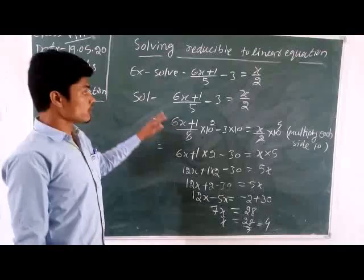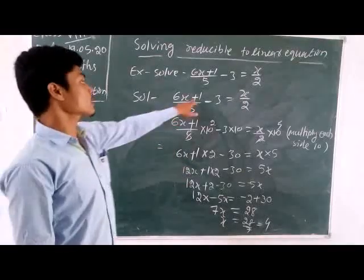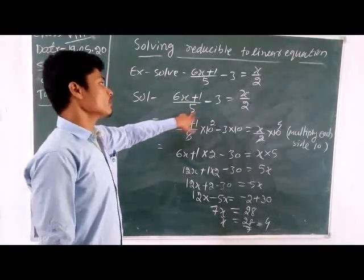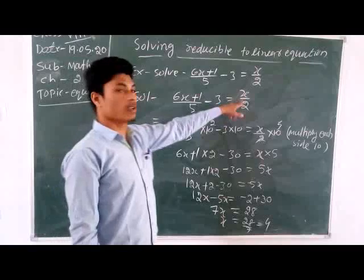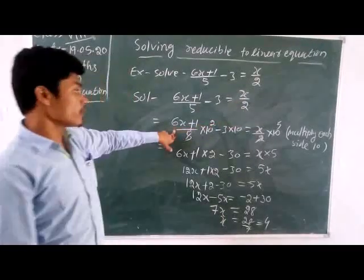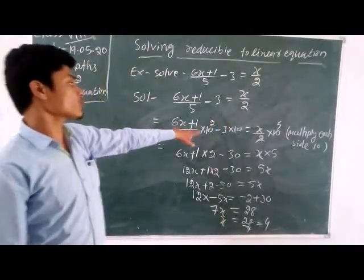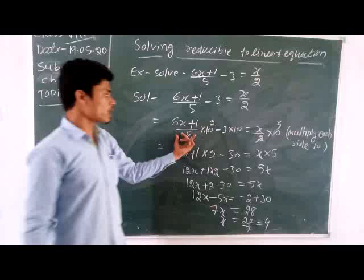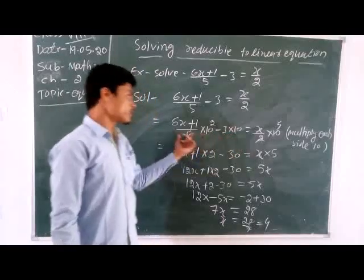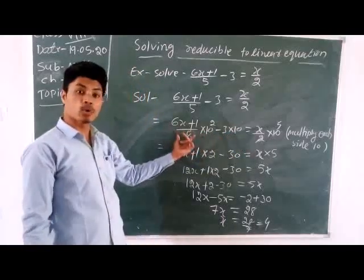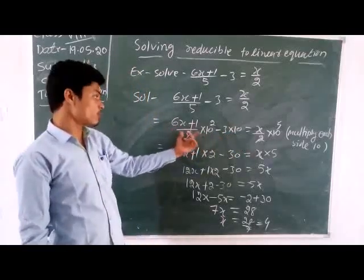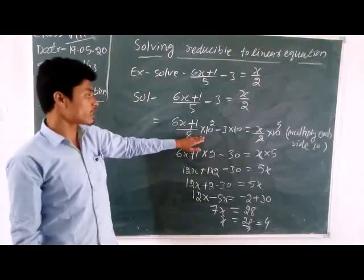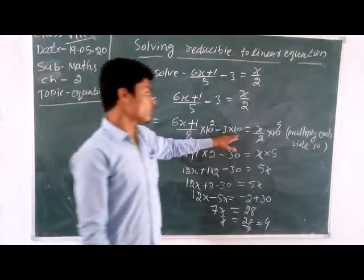Let me explain again. The equation is (6x + 1)/5 minus 3 equals x/2. I multiply both sides by 10 because there are 2 terms. The 10 is multiplied by both terms, not just one. That is why we multiply: 3 into 10 equals 30, and the LCM of 5 and 2 is 10.